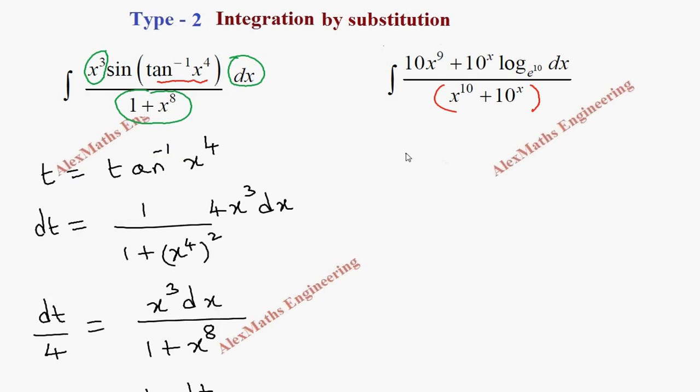So t equal to x power 10 plus 10 power x. Its differentiation dt is 10 x power 9, then this is a power x formula.